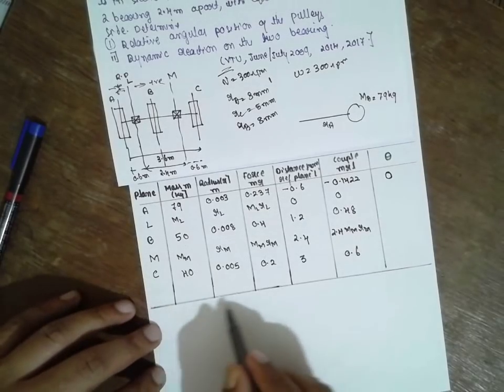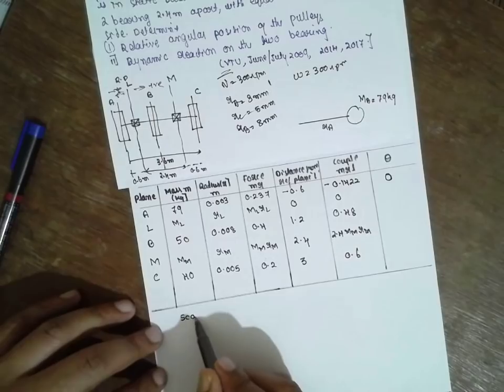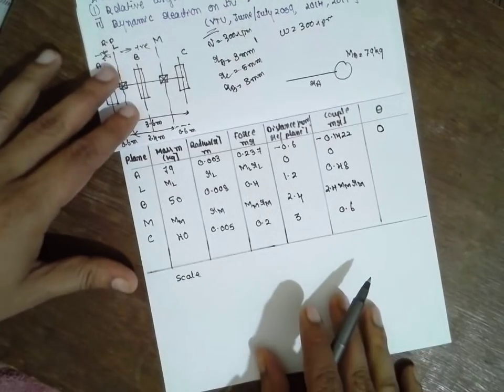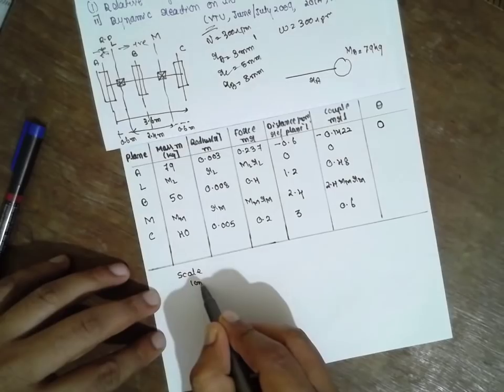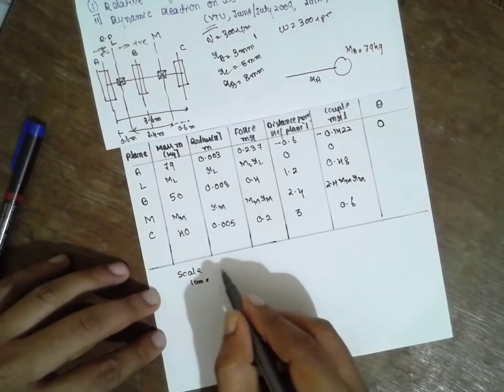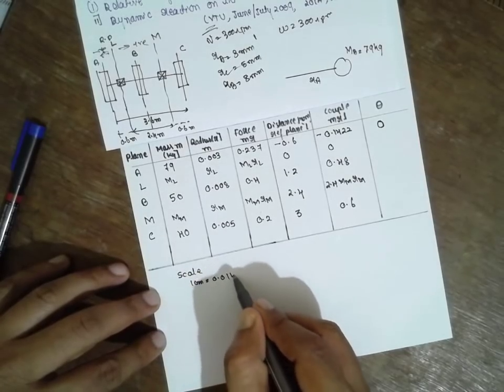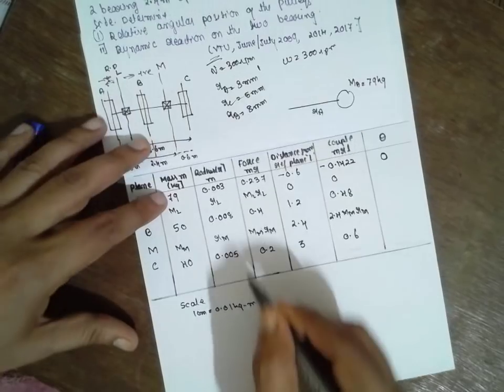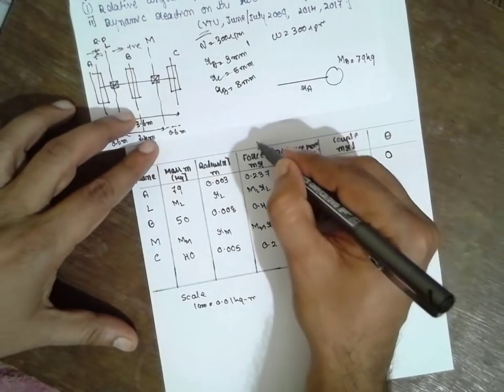I will consider a scale here. Scale: 1 centimeter equals 0.01 kg meter. These are expressed in terms of kg meter and kg meter square units.